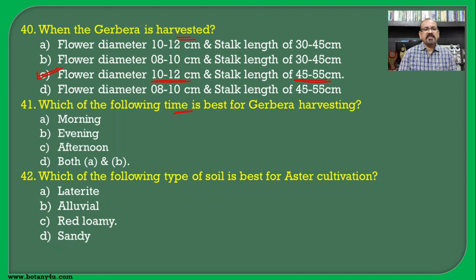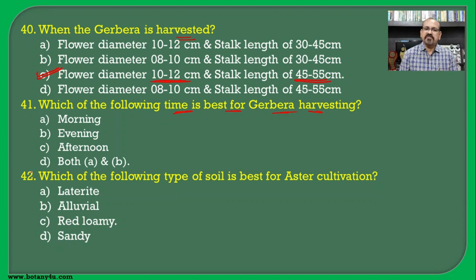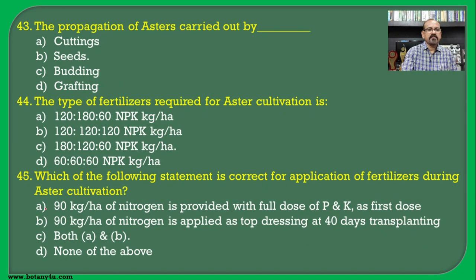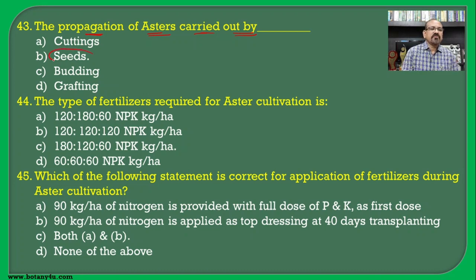Which time is best for gerbera harvesting? Gerbera harvesting is carried out either in the morning or in the evening, as it is a delicate plant and harvesting in the afternoon should be avoided. Hence both morning and evening are correct — both A and B are the answer. Which type of soil is best for aster cultivation? Asters grow very well in red loamy soil, which is the correct answer. Propagation of aster is carried out by seeds only — B is the correct answer.